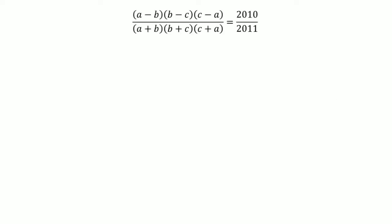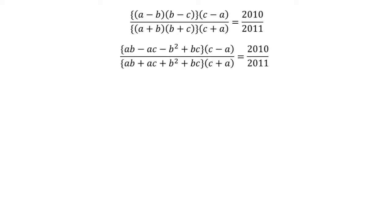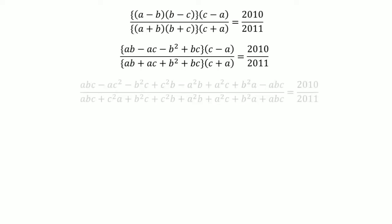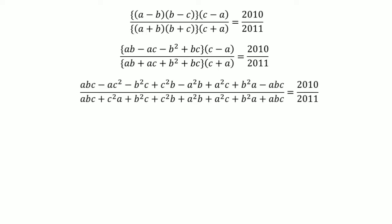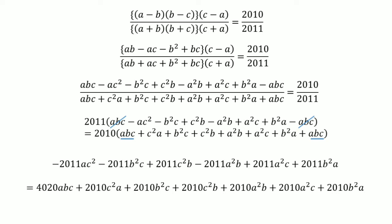Now, starting with the given expression and making some pairs for opening the parentheses, we get a new form. After further opening of parentheses we get another step, and opening more we get the next form. After cross-multiplying, we arrive at a new expression. On the right-hand side, we cancel ABC with the other ABC, and on the RHS we add the two ABC terms.